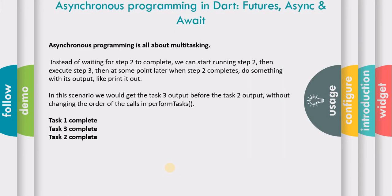Asynchronous programming is all about multitasking. Instead of waiting for step two to complete, we can start running step two, then execute step three, and at some point later when step two completes, we do something with its output. So the output will be: task one complete, then task three complete (since task two is still running), and after that task two complete.